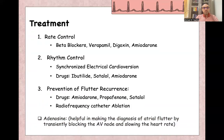Adenosine is helpful only in the diagnosis of atrial flutter — it differentiates flutter from SVT by slowing the ventricular response and revealing the flutter waves — but it has no role in the management, treatment, or conversion of atrial flutter itself.